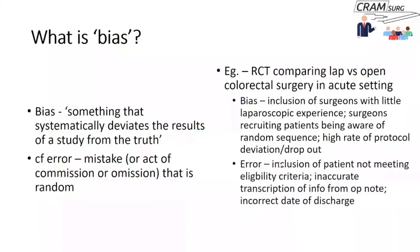Errors are random, simple mistakes. Examples include including a patient who didn't meet all eligibility criteria, transcription errors from operation notes into data collection forms, or recording an incorrect date of discharge — say, entering one day in hospital instead of 11, which would affect length-of-stay comparisons. Note that these errors are different from the type 1 and type 2 errors we discuss in the context of testing a null hypothesis; those errors are relevant in a different context.